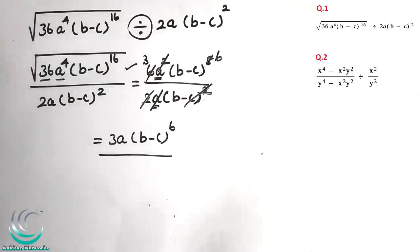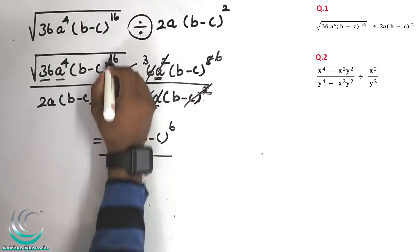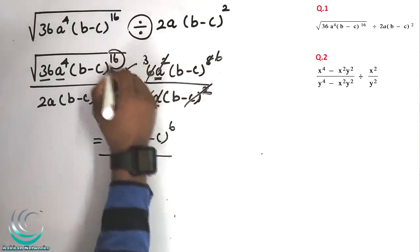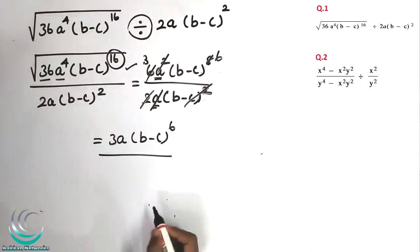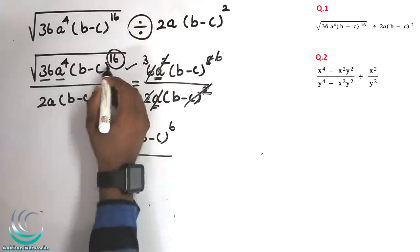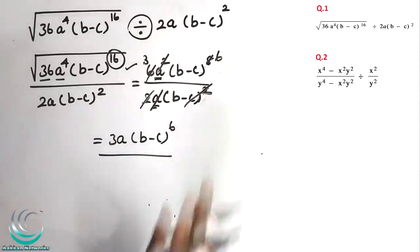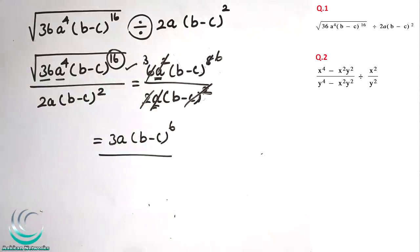So we just used two logic steps: one, apply the square root; two, cancel the numbers using the power division rule. Next question.